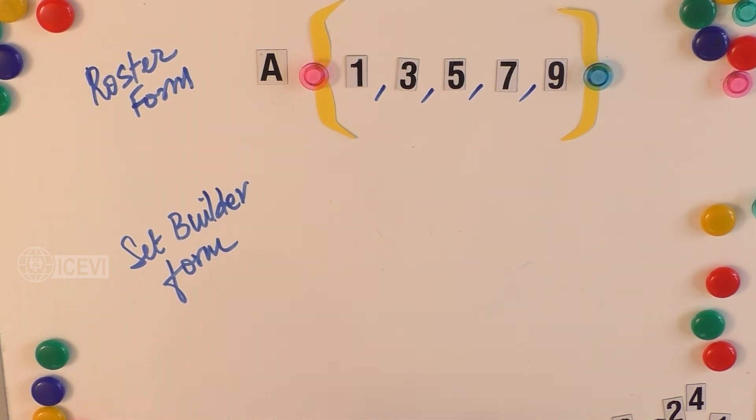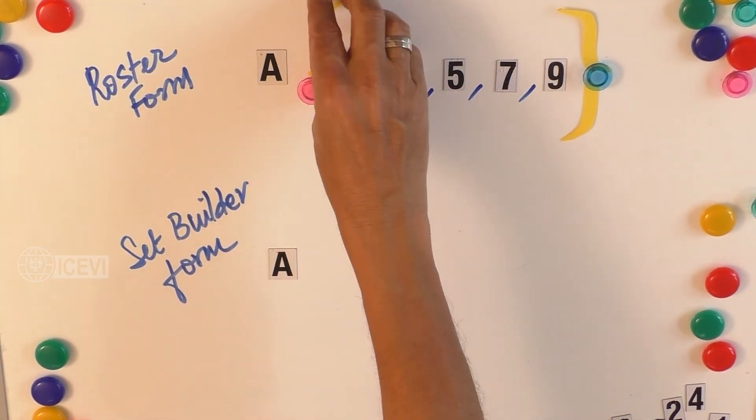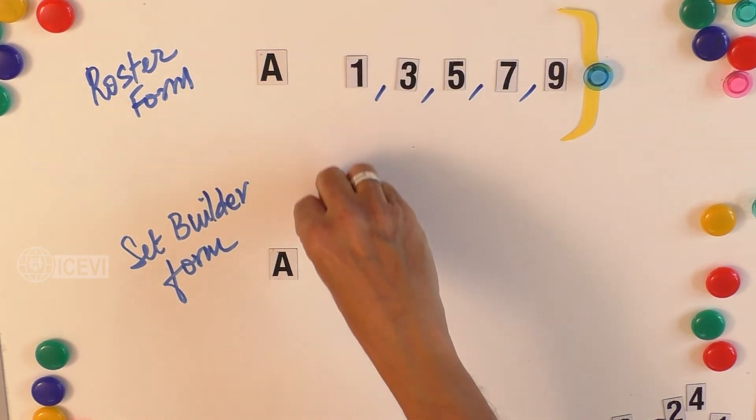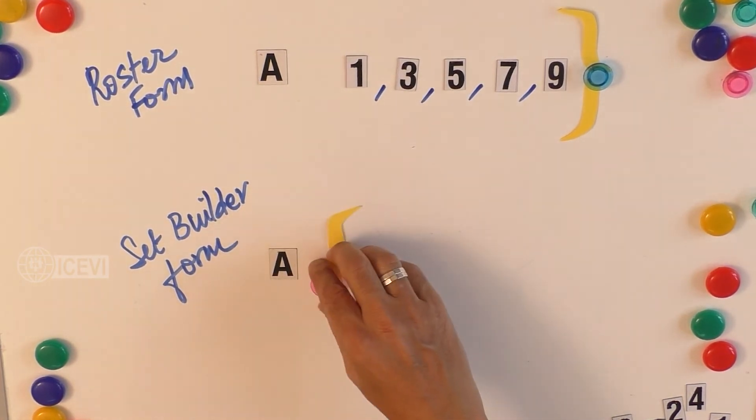In the set builder form, some property of the elements of the set is stated. So let us say A. Now, in the set builder form, usually we just mention one element.